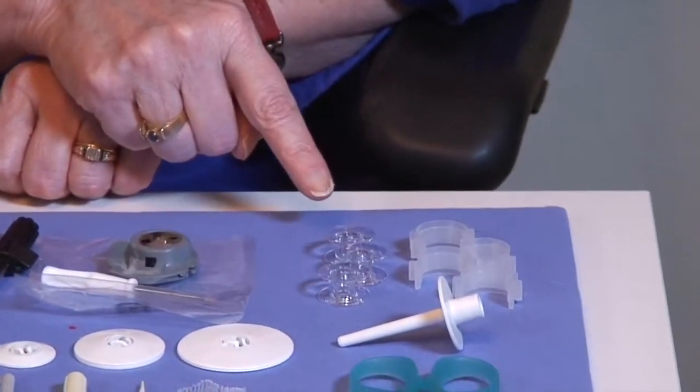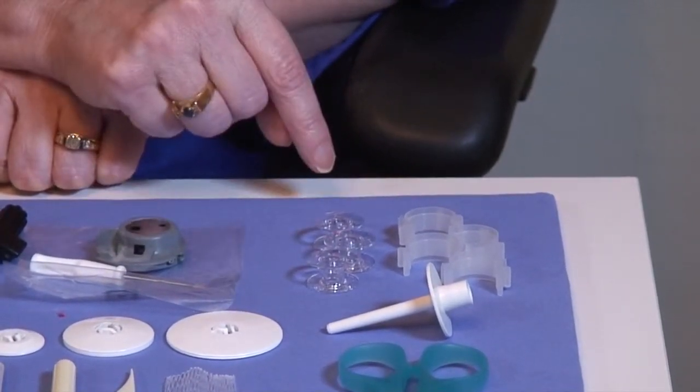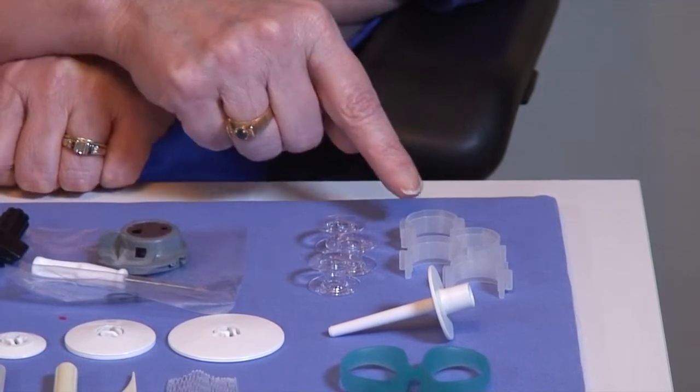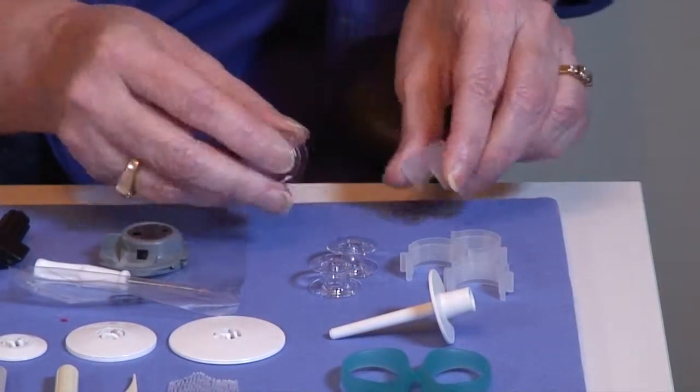We have four bobbins. We have three here. One is still in the machine. It's empty so we'll be winding a bobbin fairly soon. Bobbin clips to wrap around the bobbins to keep them from falling out.